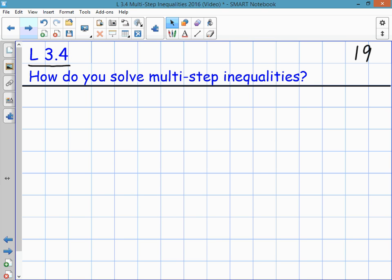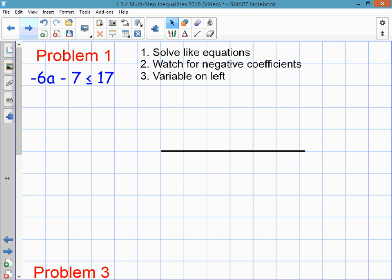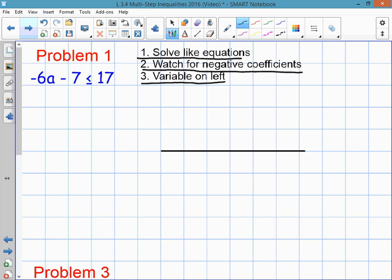Now when you solve inequalities, as you may have already noticed, it's just like solving equations. There's a slight difference, though, when you have negative numbers involved. So you're going to be watching for negative coefficients. And when you're finished, at the end, your answer should have the variable on the left. That just makes it easier to graph.